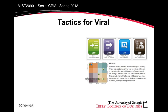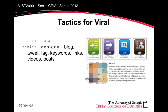Marketers would like for their message to go viral. But how do they do this? There is no magic formula, but you must do certain things. First, you have to provide interesting and entertaining content. Then you have to make this content available — ideally, leverage the whole ecology of media available: tweets, blogs, links, videos, posts, etc.